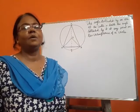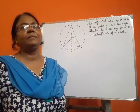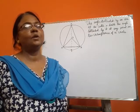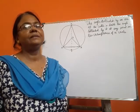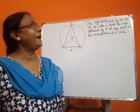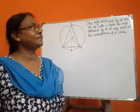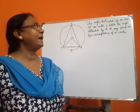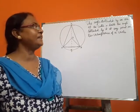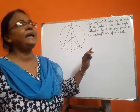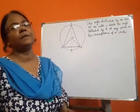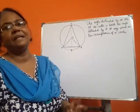Students, welcome to my video lecture on Mathematics. Today, I will discuss the theorem: the angle subtended by an arc at the center is double the angle subtended by it at any point on the circumference of a circle.